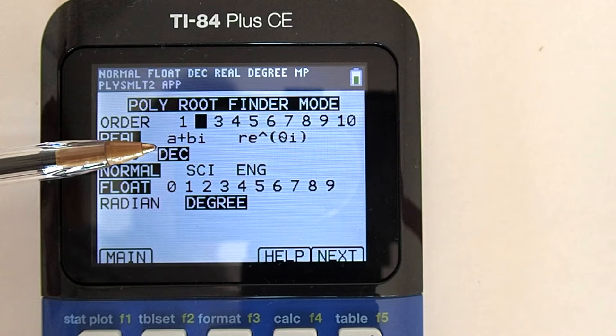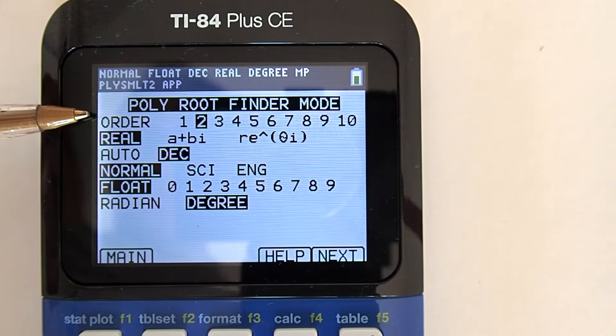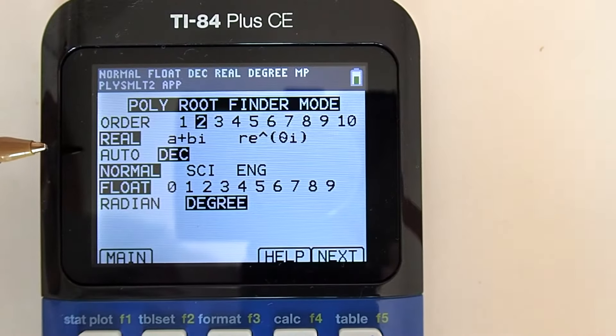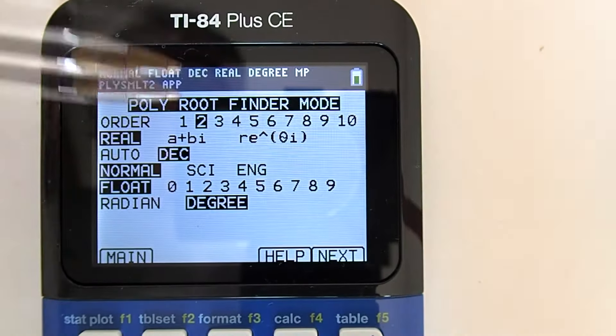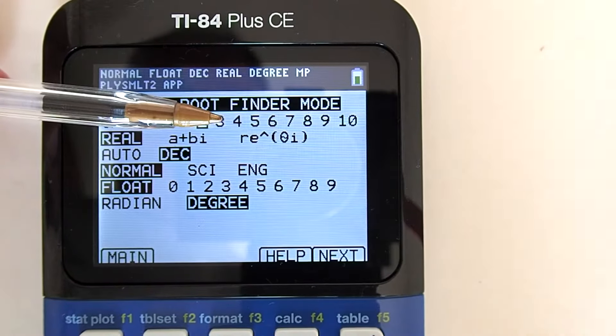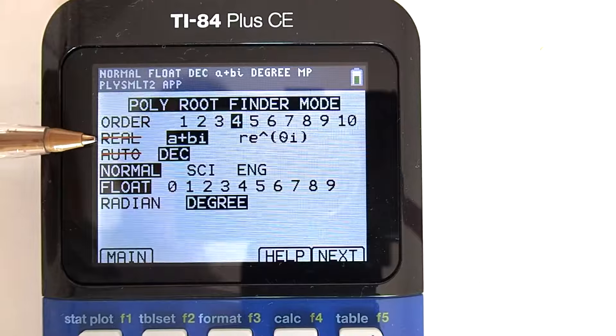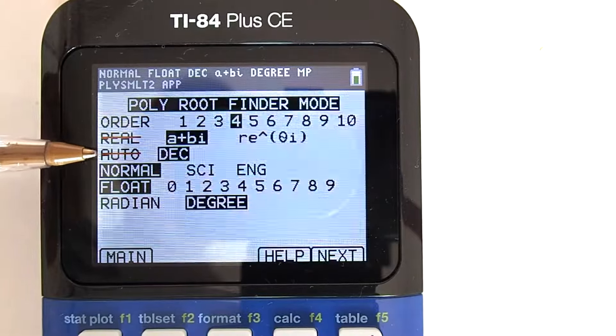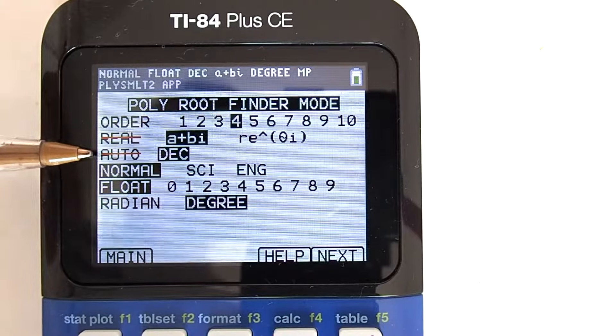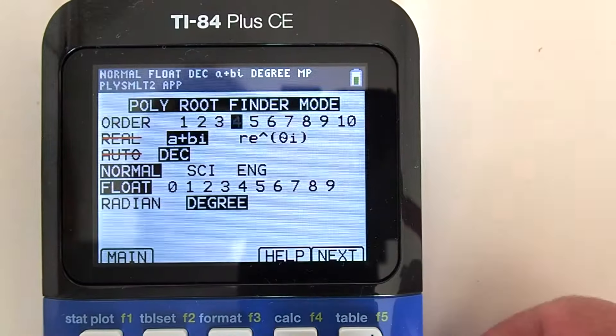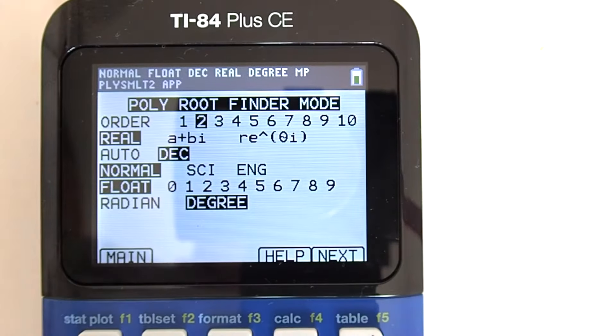If your order of your polynomial is 4 or higher, you will have no choice but to work with complex numbers. For example, go back up to order and choose 4 as your order. See how real is red lined out and the complex number is highlighted. I will change this order back to 2 and go back down to the real line.